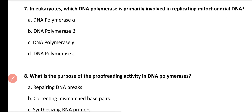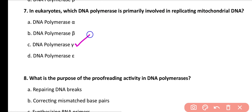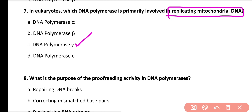Question number 7. In eukaryotes, which DNA polymerase is primarily involved in replicating mitochondrial DNA? DNA polymerase alpha, DNA polymerase beta, DNA polymerase gamma, or DNA polymerase epsilon? Correct answer is option C. DNA polymerase gamma is responsible for replicating eukaryotic mitochondrial DNA.